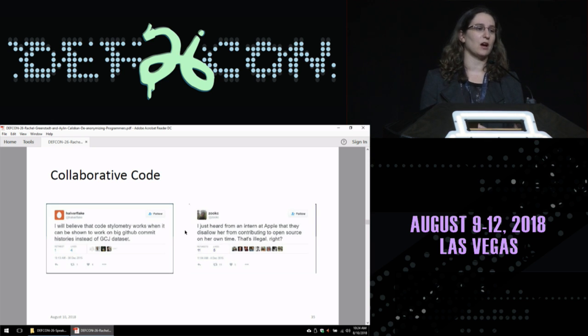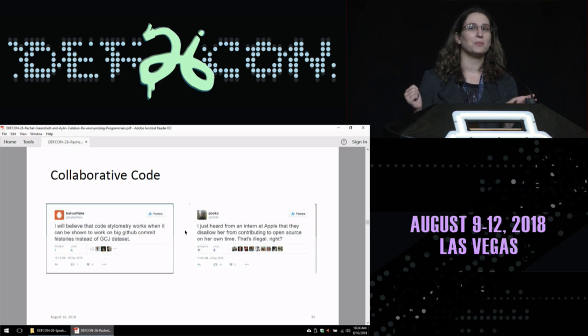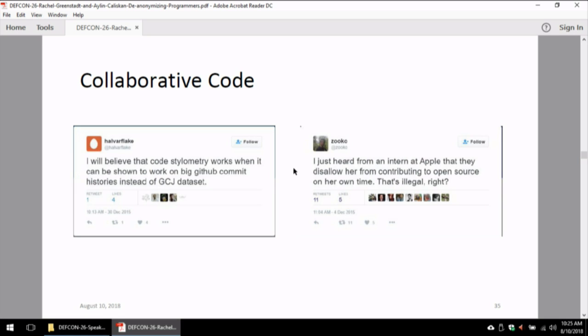Up till now, we've only talked about situations where people are writing code individually on their own. Most people probably don't actually code that way in real life most of the time. Most code is collaborative. When we started presenting the initial work, we had a couple tweets about it. Halvar said, I'll believe that this code stylometry stuff works when it can be shown to work on big commit GitHub histories instead of the Google Code Jam data sets. Zuko talked about hearing from an intern at Apple that they disallow her from contributing to open source on her own time. We were interested from this perspective, both of privacy, like if I want to contribute to something and I want to know if that particular commit is going to cause me problems later, and also to validate this stuff more in the real world.